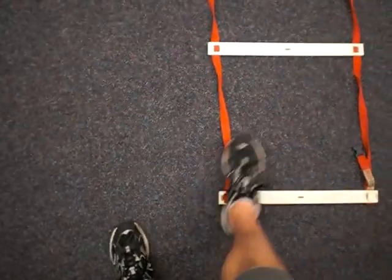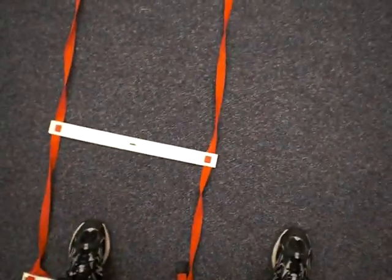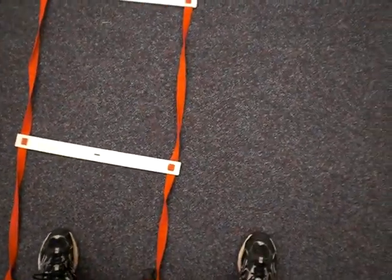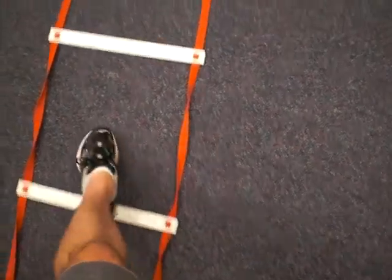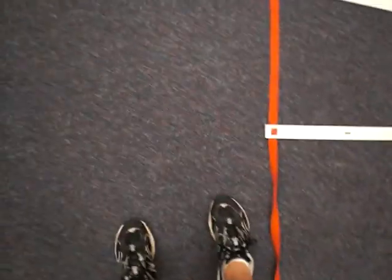So what you're going to do with this drill is start at the side of the ladder. I'm going to shuffle forward like I normally would with the Icky Shuffle, but the difference is I'm going to take this foot out, tap it on the ground before I come back through this way.